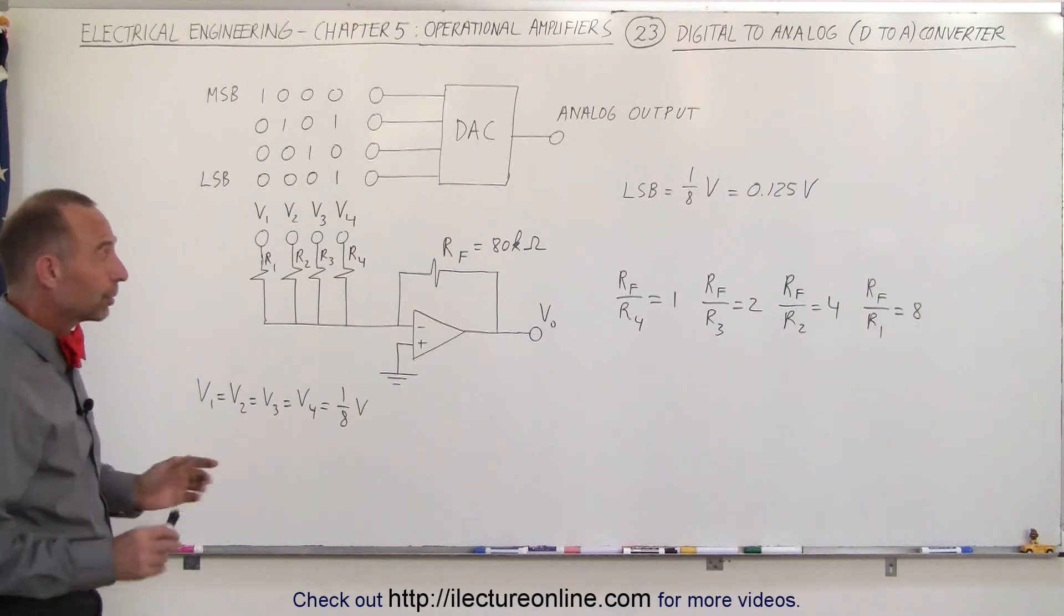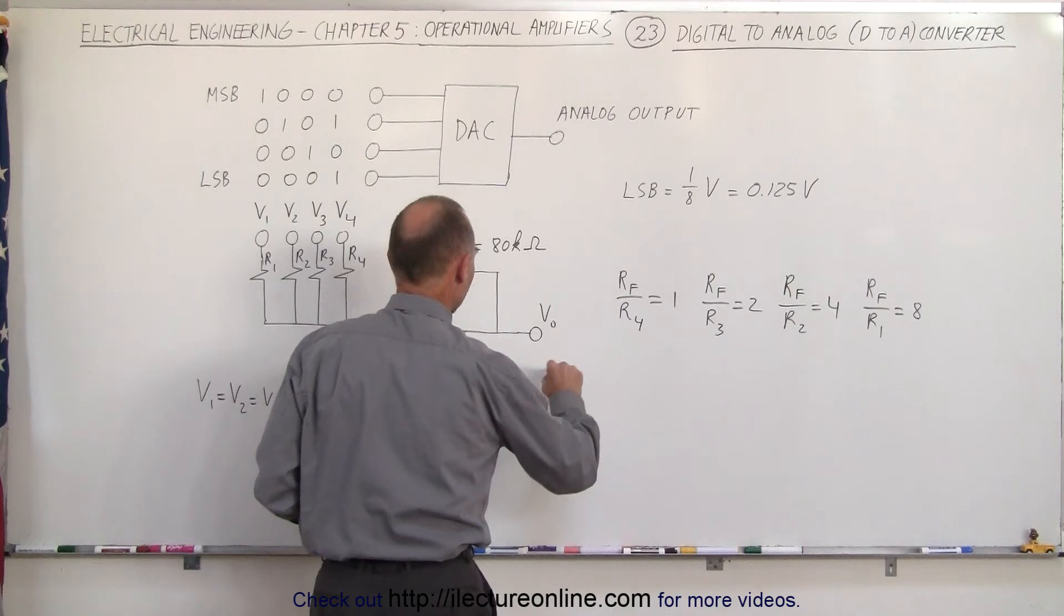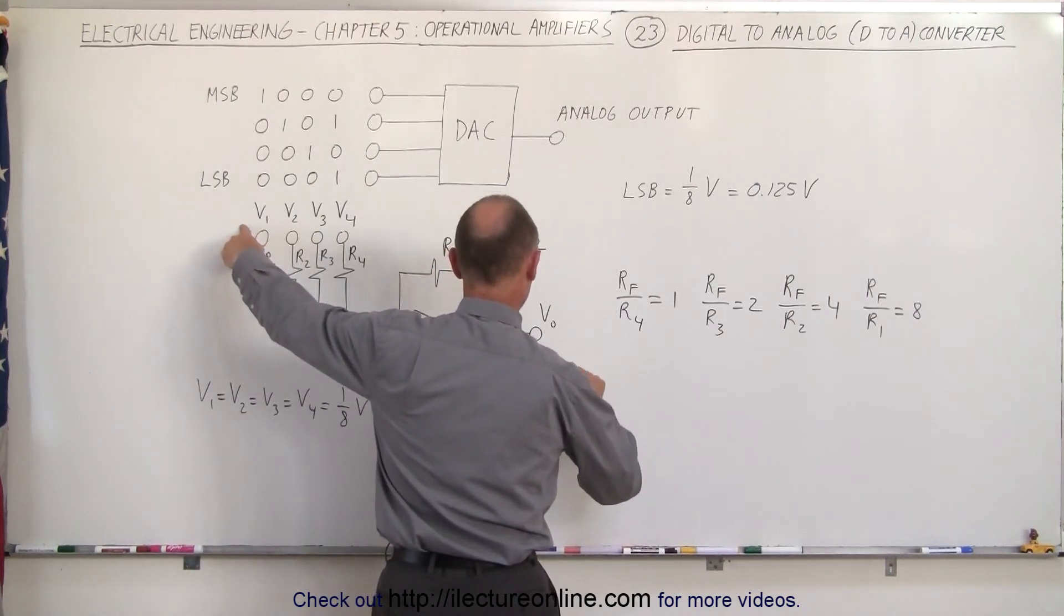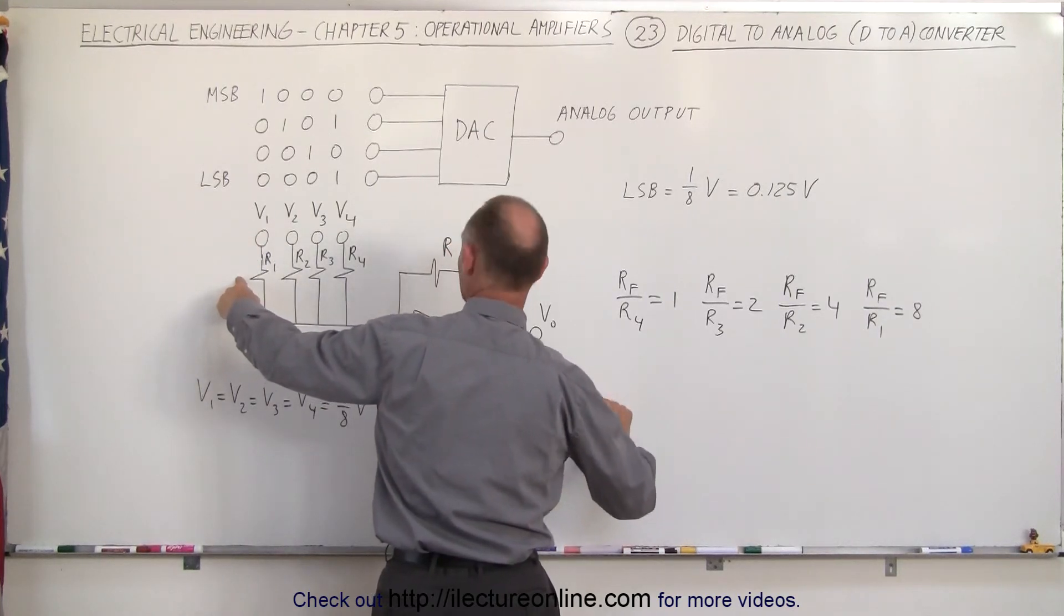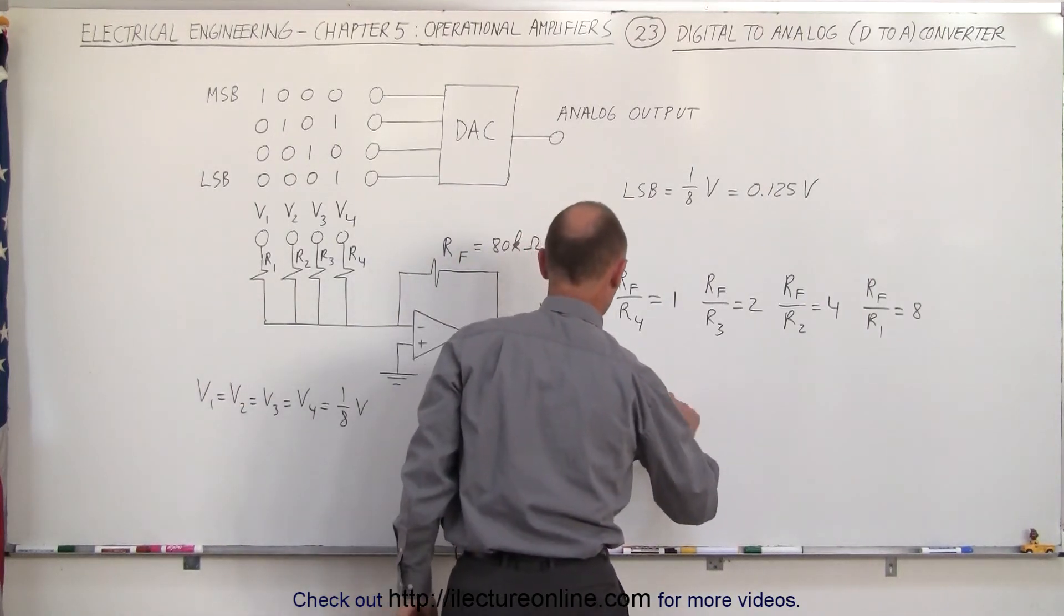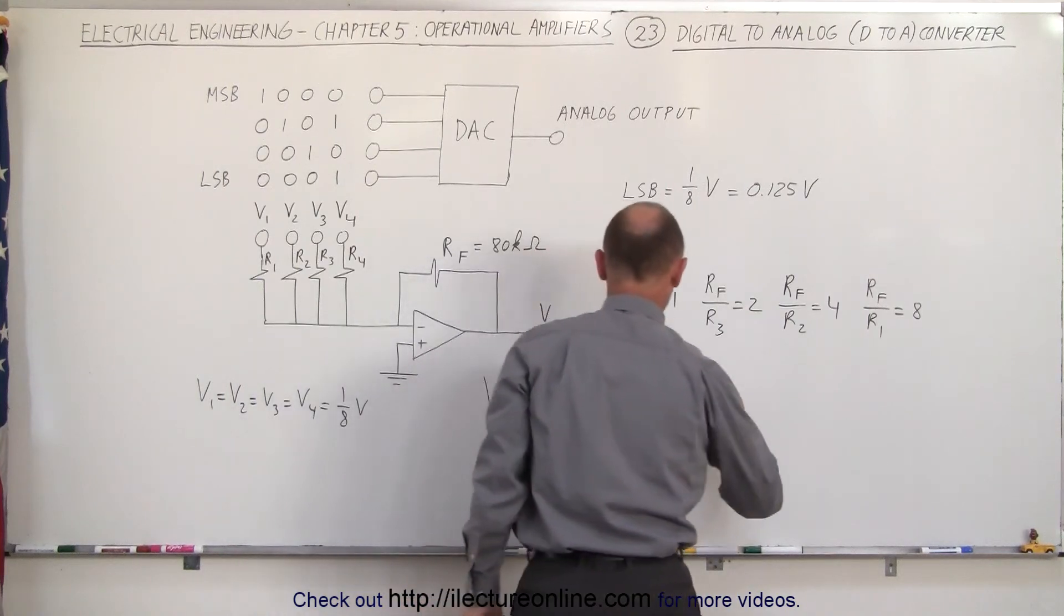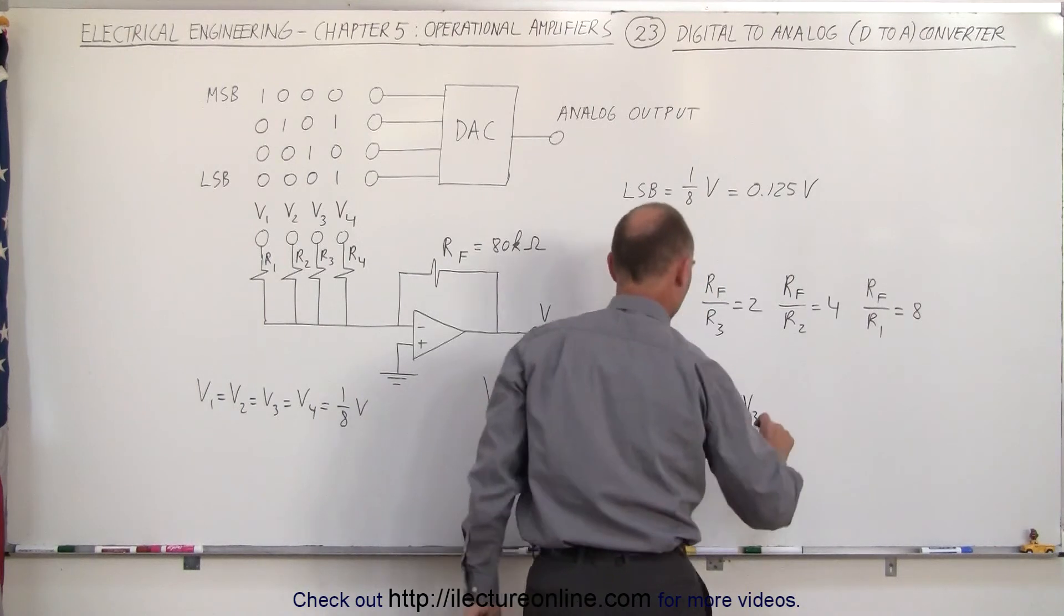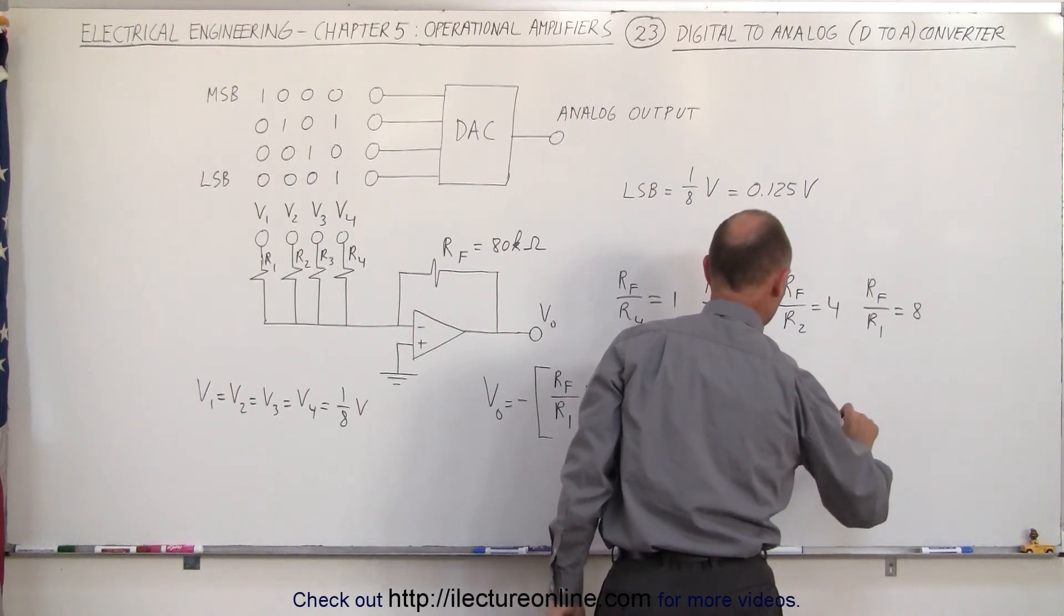So the total output can then be written with the following equation. V output is equal to the negative of the ratio of RF divided by R1 multiplied times V1, that's the most significant bit, plus RF divided by R2 times V2, plus RF divided by R3 times V3, plus RF divided by R4 times V4.